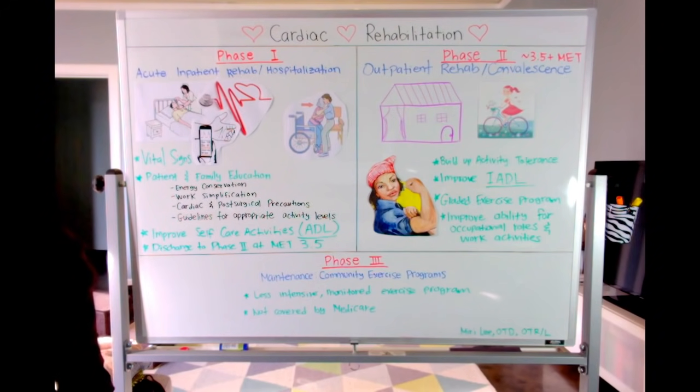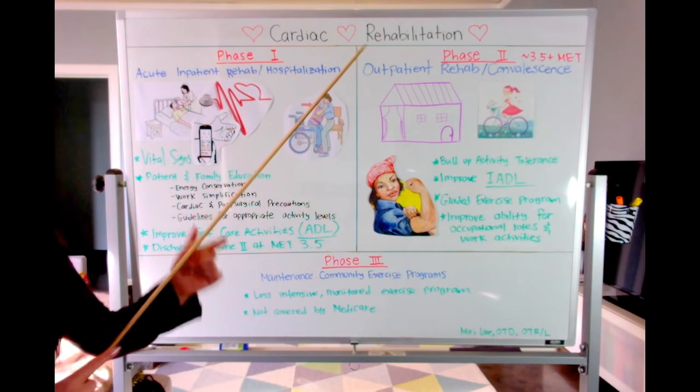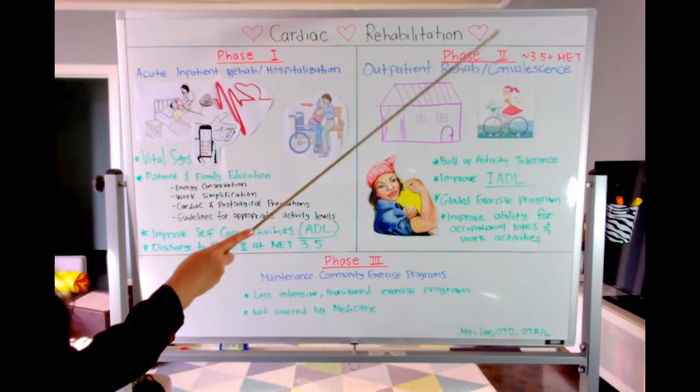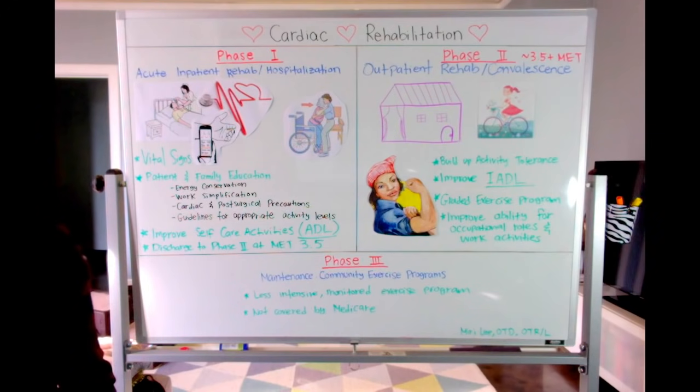Now when patients are able to perform activities at MET Level 3.5, they are discharged to phase two, and this is outpatient rehab. This is where you get discharged to outpatient after it has been determined that the clinical status and capacity will allow for safe participation in an individualized progressive exercise program. It begins after you leave the hospital and it's often done in an outpatient setting, meaning you'll travel back and forth from your home to a rehab center for this portion of the recovery.